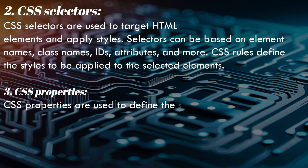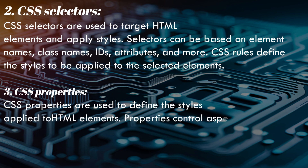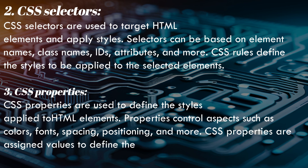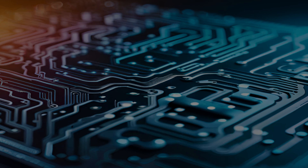3. CSS Properties — CSS properties are used to define the styles applied to HTML elements. Properties control aspects such as colors, fonts, spacing, positioning, and more. CSS properties are assigned values to define the appearance and layout of web pages.